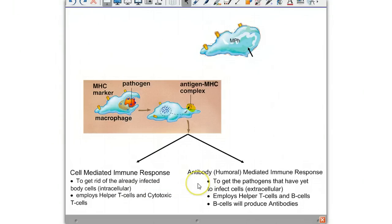On the antibody side of the battle, we need to get to the pathogens that have yet to infect cells, these extracellular pathogens. On this side, we're going to employ helper T cells and B cells, and the B cells are going to produce antibodies. Come back for the next video, where we go into the details of each of these immune responses.